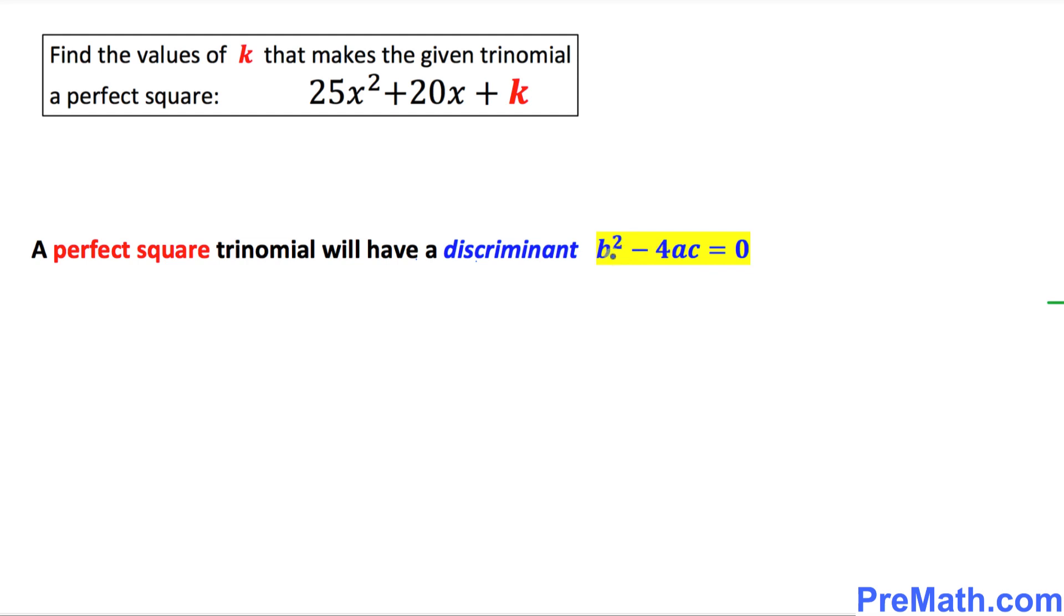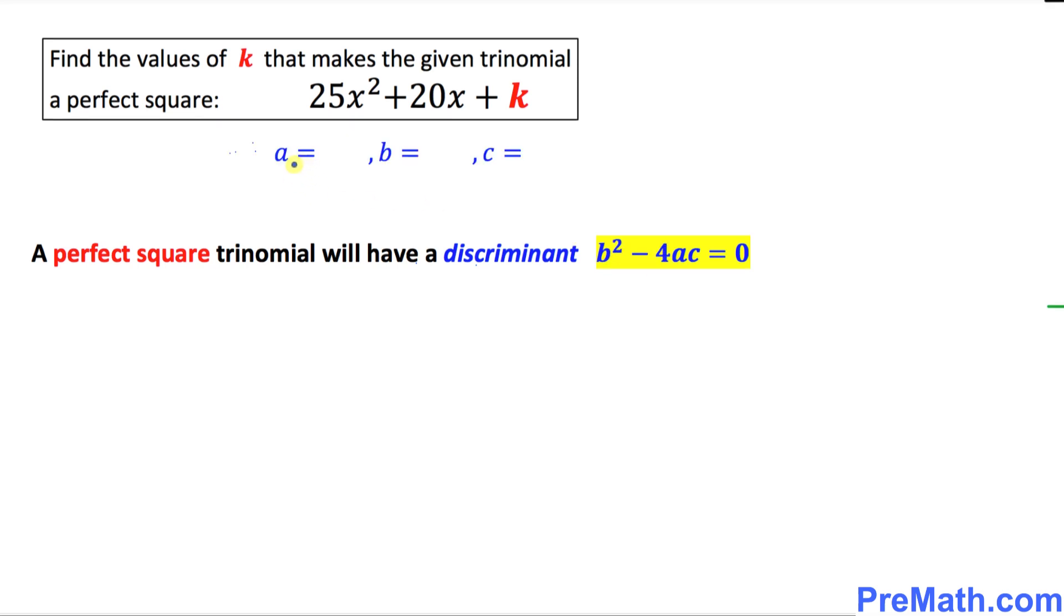Let's go ahead and calculate the value of this discriminant. And for that purpose we are going to find the values of a, b, and c. And here is the standard form of a quadratic equation. Let's compare this one with our given trinomial. We can see that our a equals 25, b is 20, and c is simply k.